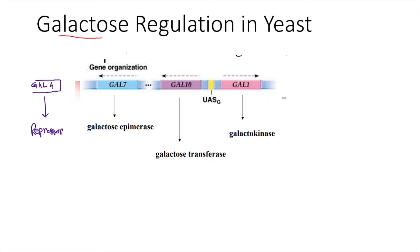Galactose regulation in yeast cells only happens in presence of galactose. Yeast has certain genes which code for enzymes involved in the metabolism of galactose, and these enzymes convert galactose into D-glucose 6-phosphate which enters the glycolytic pathway. You have gal1 gene which codes for galactokinase, gal10 gene which codes for galactose transferase, and gal7 gene which codes for galactose epimerase.